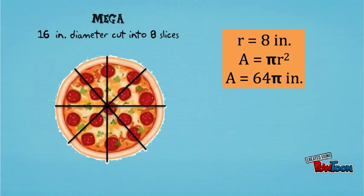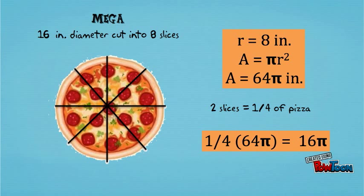If a student gets two slices, this means they get two eighths or one fourth of the pizza. And one fourth of 64 pi is 16 pi.